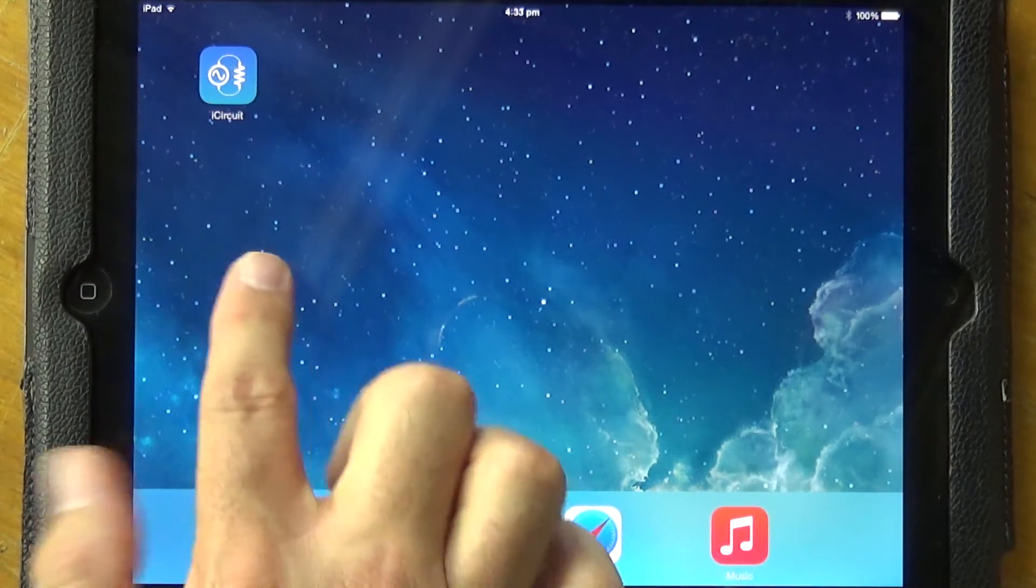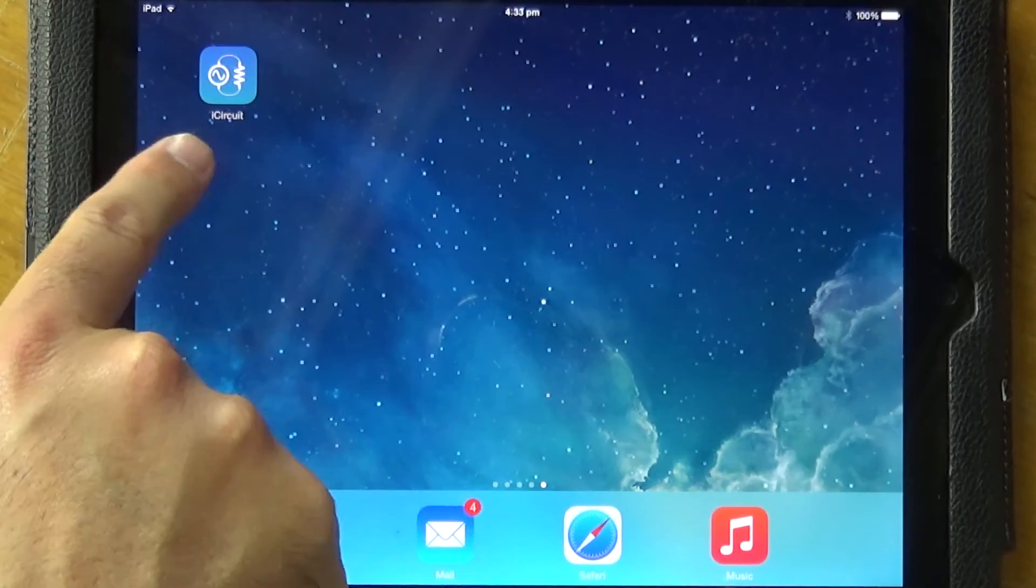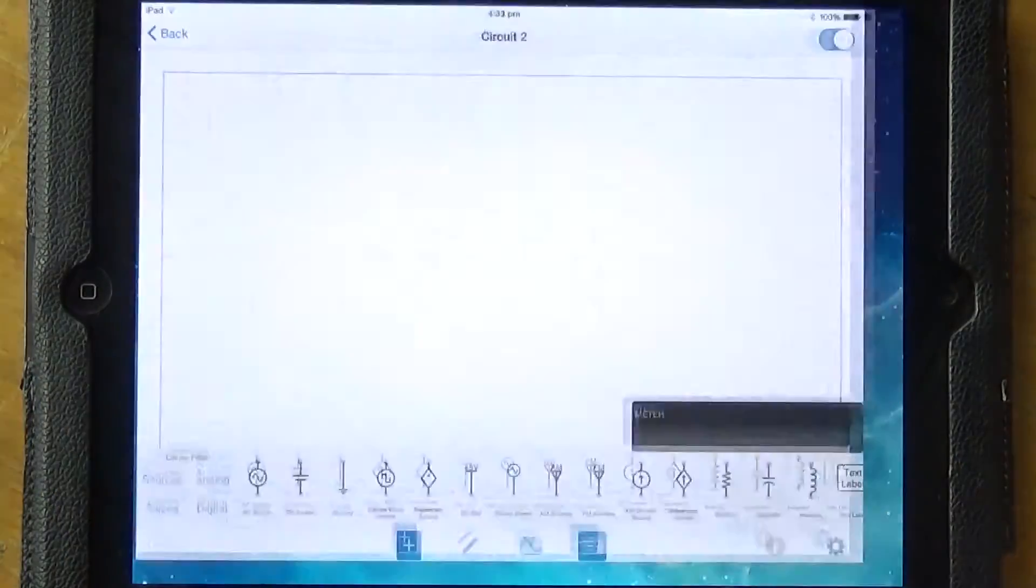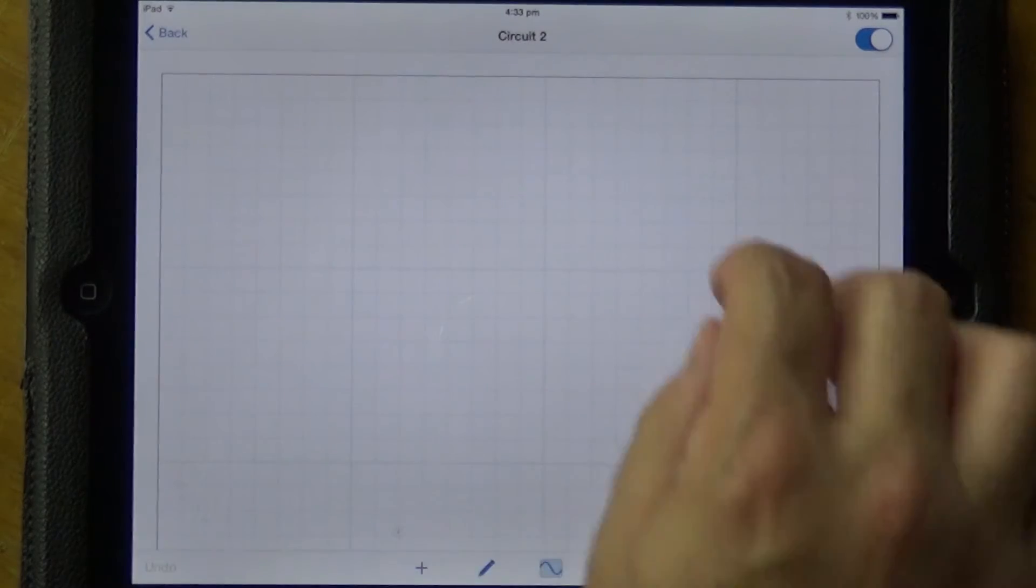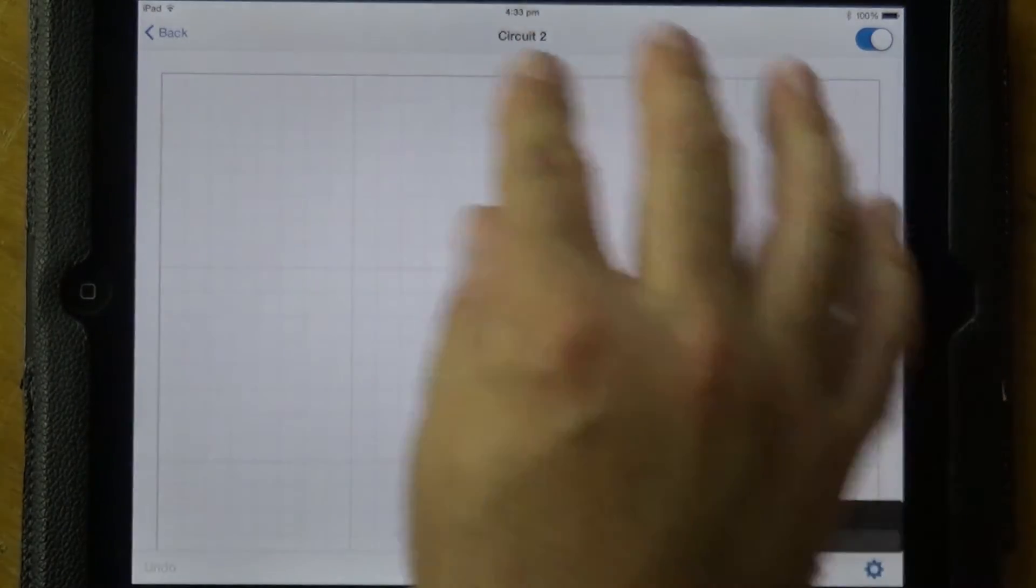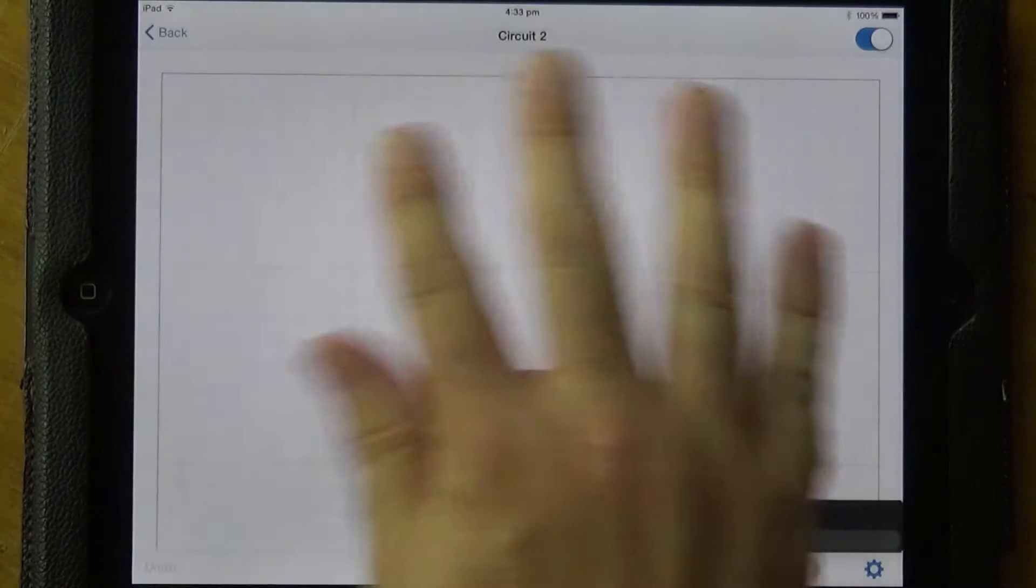Okay, so the simulation software that I've settled on for the iPad is called iCircuit. Let's just open up and have a look. All right, so what you end up with is a matrix style grid pattern which is your workspace.